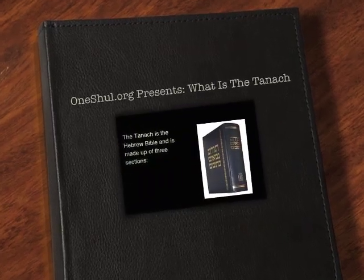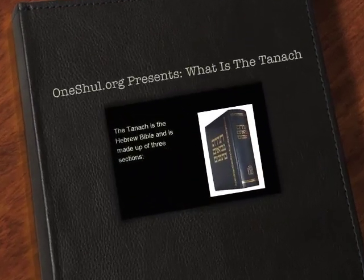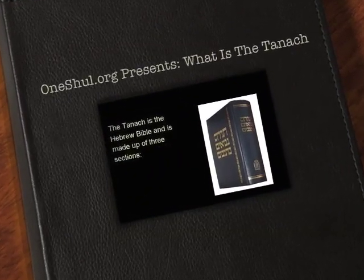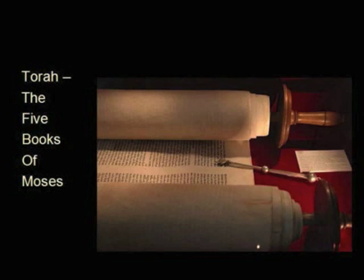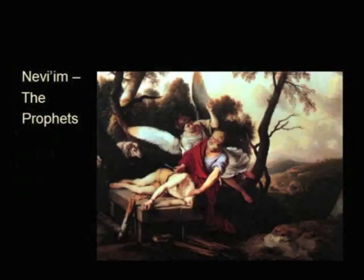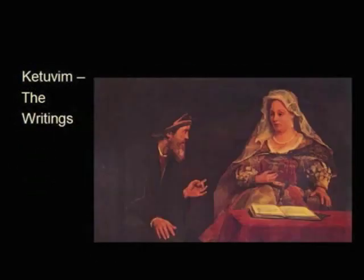The Tanakh is the Hebrew Bible. It is made up of three sections: the Torah, which are the five books of Moses; the Nevi'im, the Prophets; and the Ketuvim, the Writings.